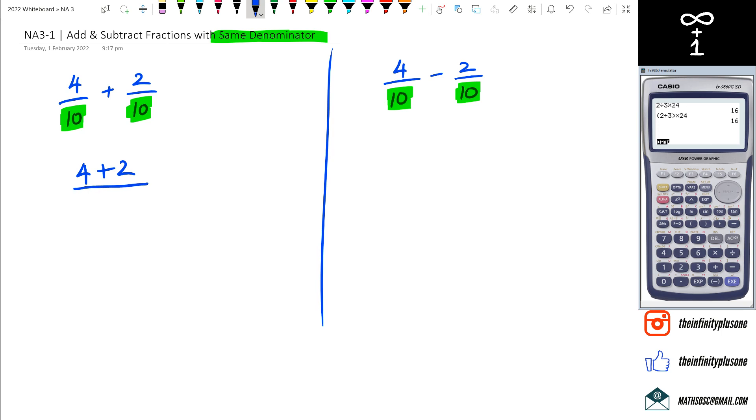Because they have the same denominator, all you have to now do is just add whatever's in the numerator. So that would be 4 plus 2, so in this case this is going to be 6 over 10.